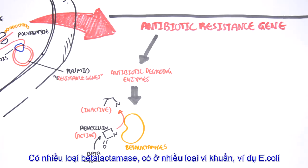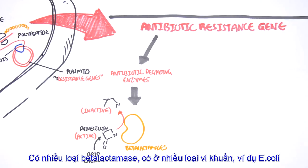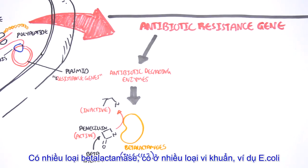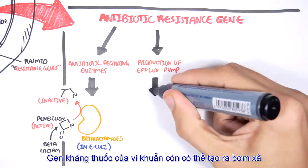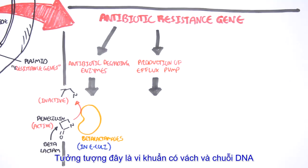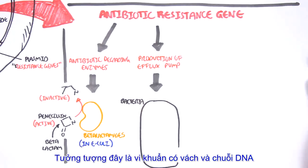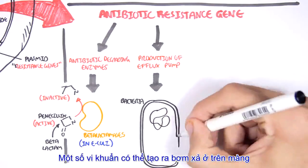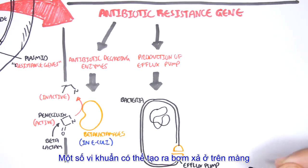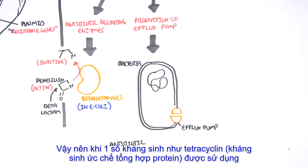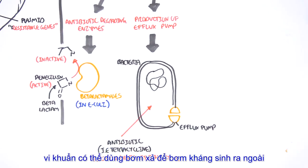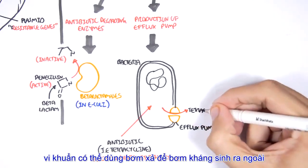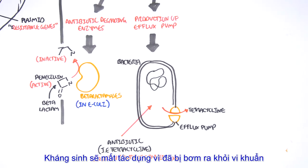There are many types of beta-lactamases, and they are found in many types of bacteria such as E. coli. The antibiotic-resistant gene of a bacteria may also produce what's called an efflux pump. Some bacteria can produce efflux pumps found on the membrane. When antibiotics such as tetracycline, which normally interferes with bacterial protein synthesis, are used, the bacteria can use the efflux pump to pump out the antibiotic, so tetracycline will have no effect on the bacteria.